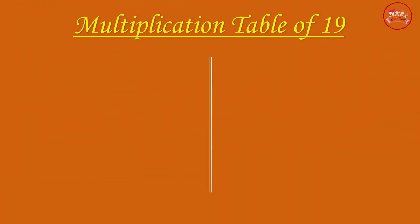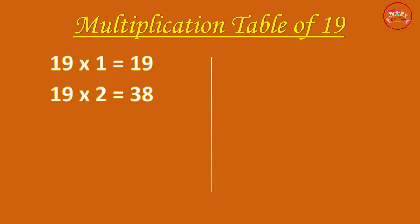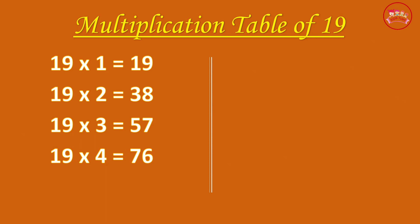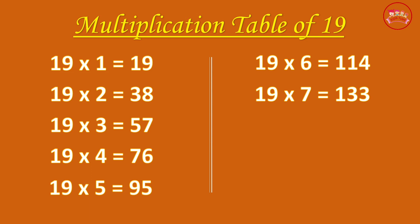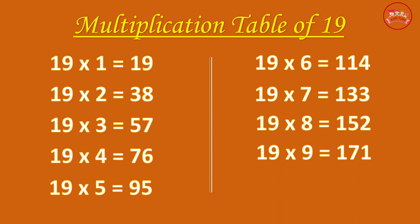Multiplication Table of 19. 19-1 is 19, 19-2 is 38, 19-3 is 57, 19-4 is 76, 19-5 is 95, 19-6 is 114, 19-7 is 133, 19-8 is 152, 19-9 is 171, 19-10 is 190.